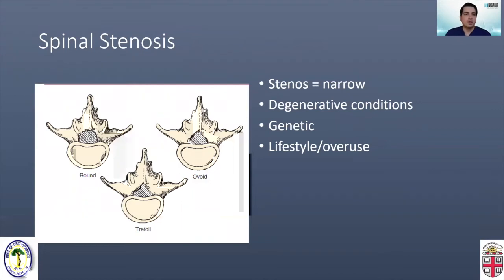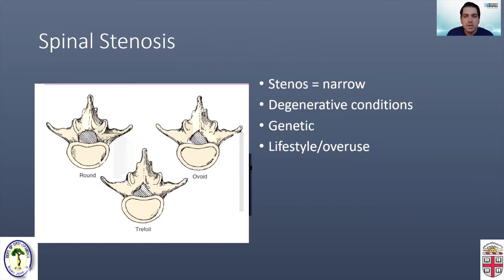Spinal stenosis comes from the Greek term stenos, which means narrow, and refers to a narrowing of the spinal canal. It can be caused by a number of different things. Some people are born with a more narrow spinal canal to begin with, and that's something we call congenital stenosis. It's also commonly seen with degenerative conditions — wear and tear on your spine and the joints in your spine — and can also be associated with lifestyle and overuse.